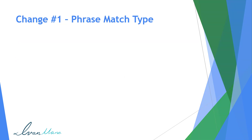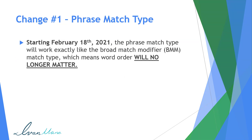So let's get started with the actual changes. The first change pertains to phrase match type. Starting February 18th, 2021, the phrase match type will work exactly like the broad match modifier match types, which means the word order will no longer matter. So for those of you that are familiar with this, great. Just a little reminder to those who are not sure what the BMM is — the broad match modifier — basically with the phrase match type keyword, all the words you add in the keyword have to be in order.